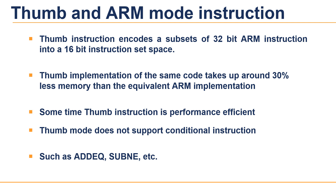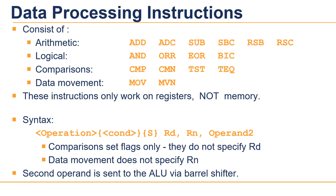Code density was the main driving force for the Thumb instruction set. It was also designed as a compiler target rather than for handwritten assembly code. I recommend writing Thumb-targeted code in a high-level language like C or C++. Nowadays compilers are very intelligent and can take care of memory constraints. Now let's move on to data processing instruction sets.